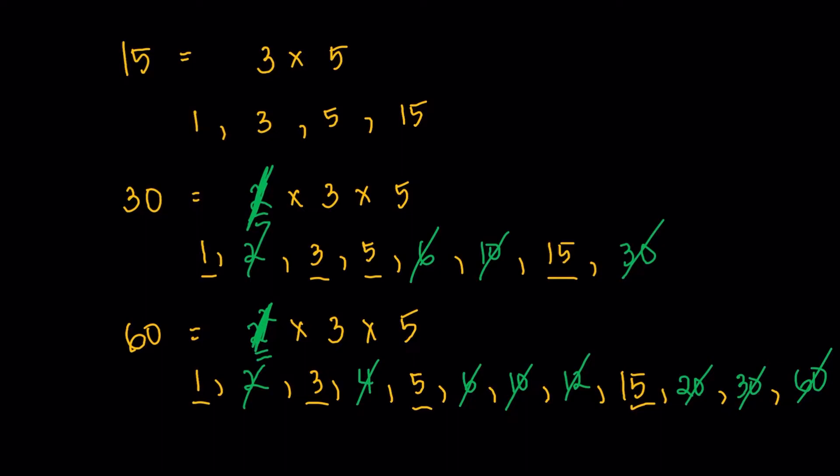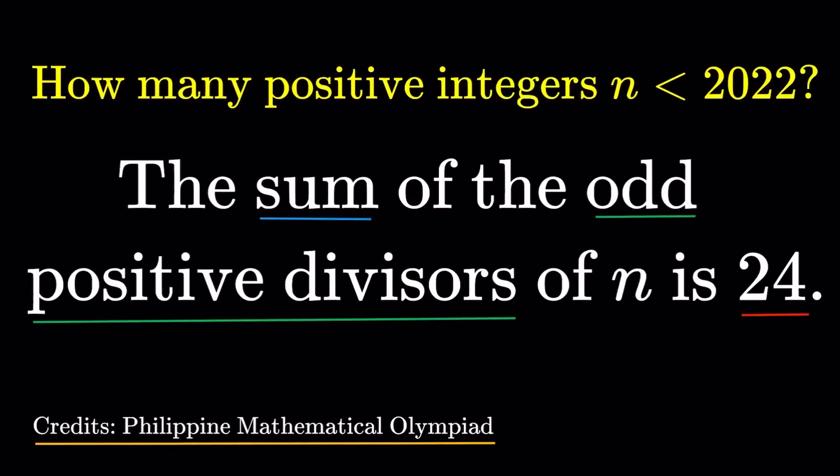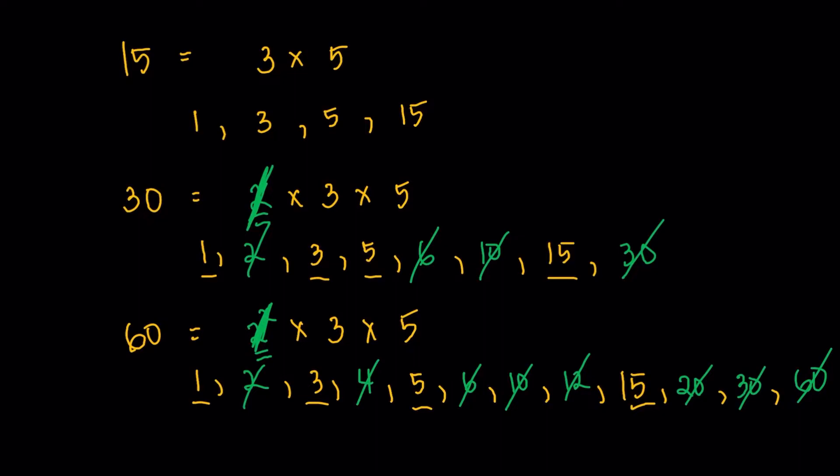Now in fact, 15, 30, and 60, there are actually examples that work here. Because if you try to add the factors of 15, 1, 3, 5, and 15, that's 24. Which is good.